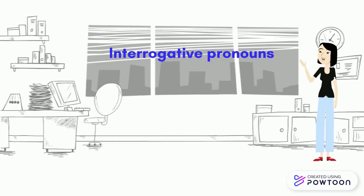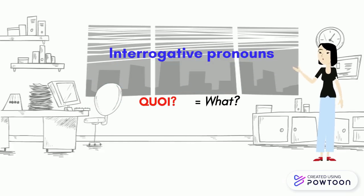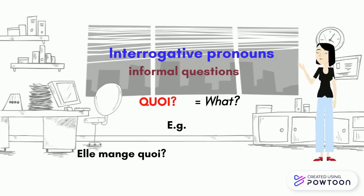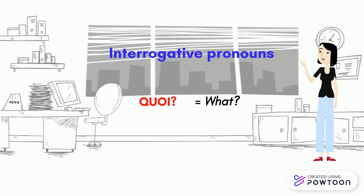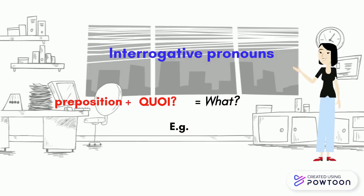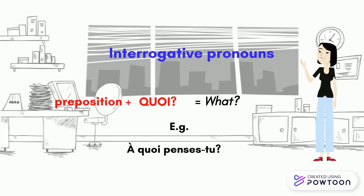Then we have Quoi? — it also means « What? » and is used in informal questions. For instance, Elle mange quoi? — What is she eating? It can also be used in all types of registers with a preposition. For instance, À quoi penses-tu? — What are you thinking about?